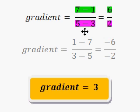You could even do it the other way around. You might think it might give you the wrong answer, but minus 6 divided by minus 2 still gives you 3. So, let's do a quick summary.